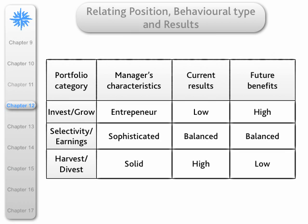Let me say a little about relating a business's position, the behavioural types, and the anticipated results. For invest/grow type sales, we need entrepreneurs — current results are likely to be lowish, but future benefits are likely to be high. For harvest/divest, the ability to be solid means current results should be quite high and future benefits should be low.